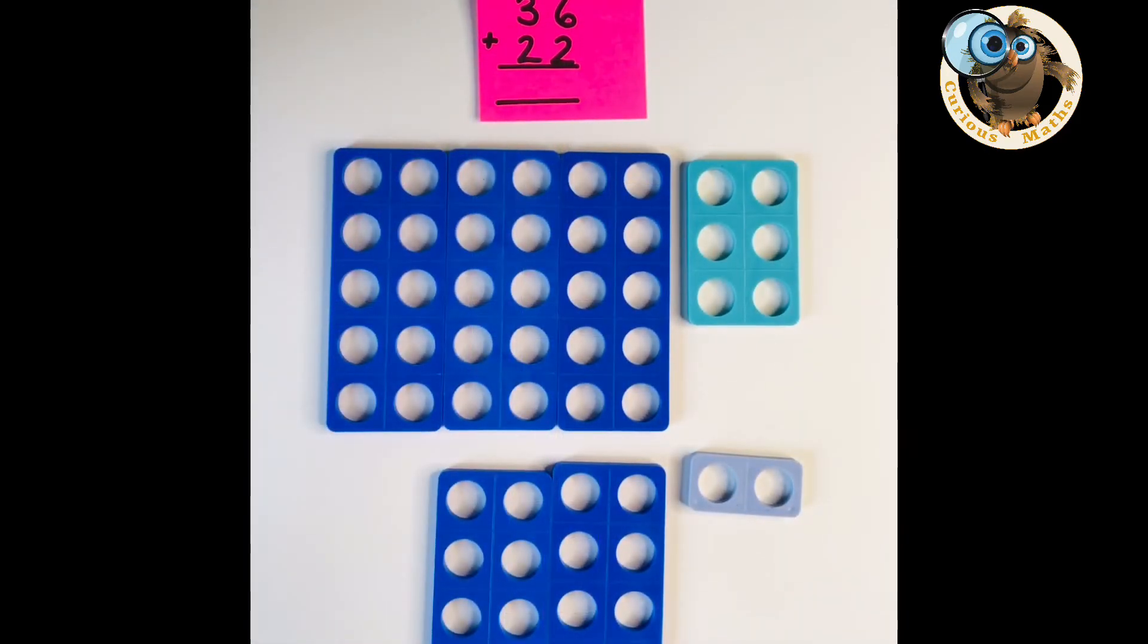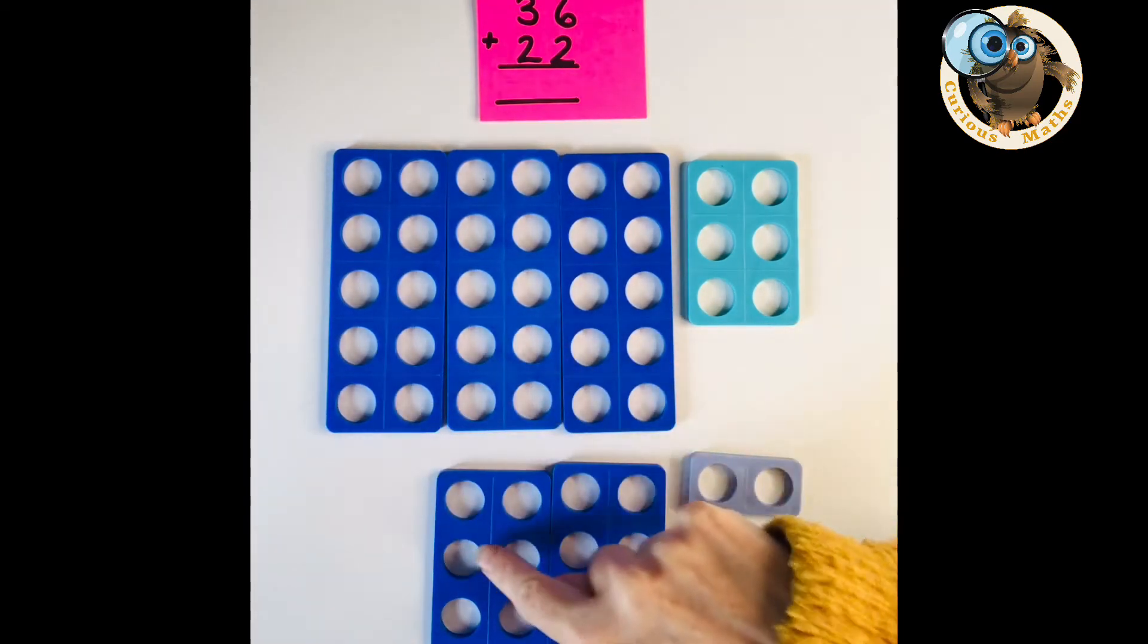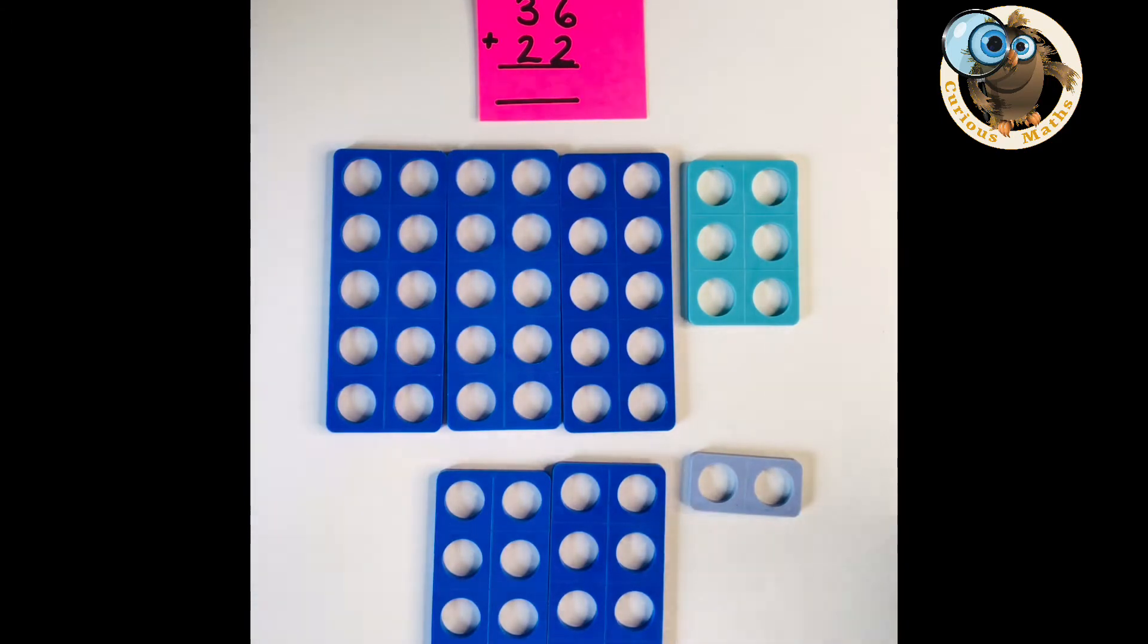So this is the same question but I built it with Numicon so it just depends what manipulatives you like to use in your classroom or at home but what's great about Numicon is that for some children it's still countable so obviously we were hoping they're going to go 10, 20, 30, 40, 50, there are five tens, 50 but if they can't and they still need some practice on their counting they can use the holes to help them.